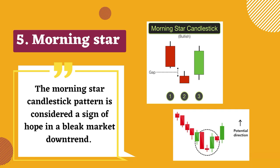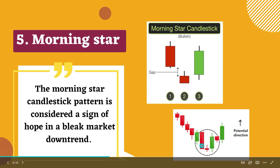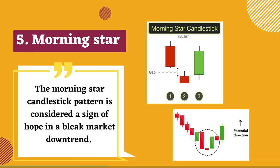Traditionally, the star will have no overlap with the longer bodies as the market gaps both on open and close. It signals that the selling pressure of the first day is subsiding and a bull market is on the horizon.